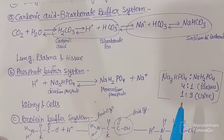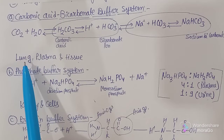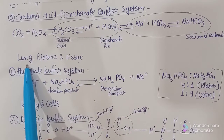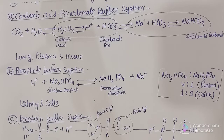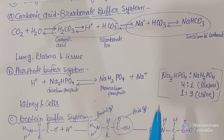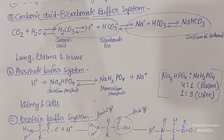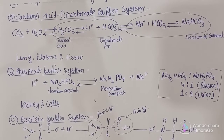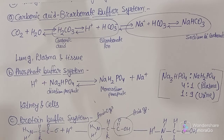In summary, the body maintains different types of buffer systems depending on requirement. The carbonic acid and bicarbonate buffer system operates in lung, plasma, and tissue; the phosphate buffer system in kidney and other cells; the protein buffer system in cells and plasma. By interchanging different ions, the body manages to neutralize excess acid or base and maintain the average pH of 7.40 for a healthy condition.